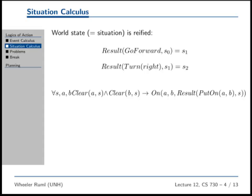That's why it's called the situation calculus — because we have situations in the logic and we reason about situations. S0 will be the initial situation. 'Go forward' is an action, which is a constant in the logic. The result function takes an action and a situation and gives you back a situation. You'd say something like: if A is clear in S and B is clear in S, then A is on B in the situation that results from putting A on B in S. This is called blocks world.